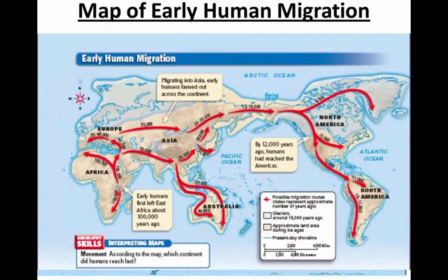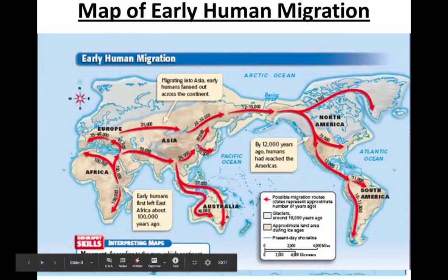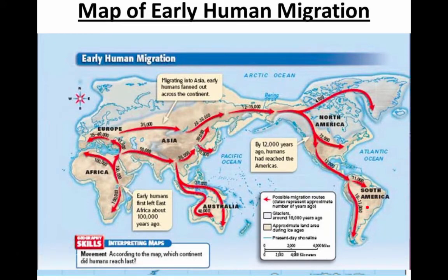We'll talk about the Bantu migrations into the rest of Africa, the Indo-European migrations, and the Austronesian or Polynesian migrations. But slowly but surely, humans began to move and settle throughout the world. Humans have lived in very small societies because we're animals and we're social, just like other types of animals, and so we've been living in small groups and thus societies for hundreds of thousands of years.